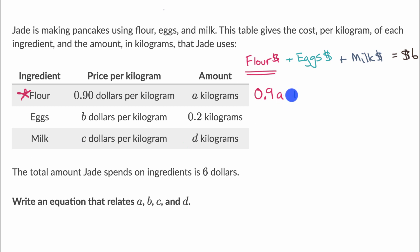Now, what about eggs? Well, the same notion. 0.2 kilograms times B dollars per kilogram, if I take the product of these two, I'm gonna get 0.2B dollars. Or I could just think of it as 0.2B, if I don't write the dollar symbol.